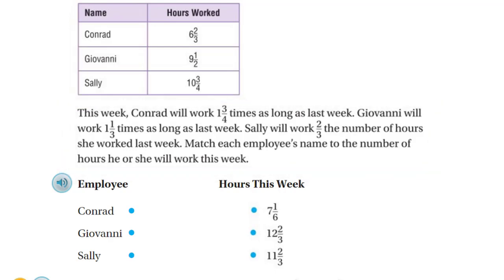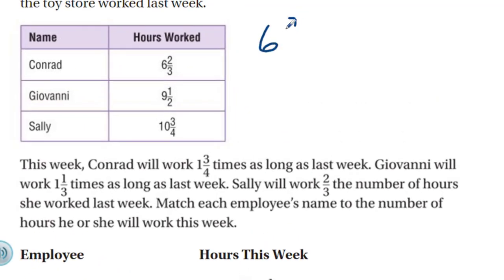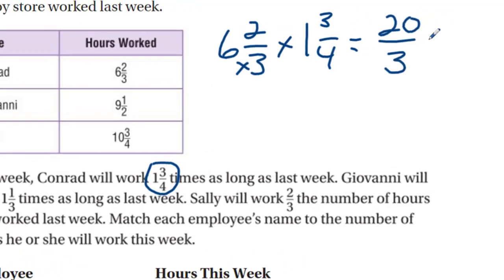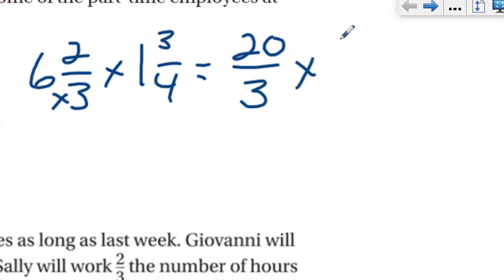Let's take Conrad. He worked six and two-thirds hours and will work one and three-quarters times as long. Since it's more than one times, his answer should be more than six and two-thirds. Let's change these to fractions greater than one: six and two-thirds becomes twenty-thirds (6×3+2=20, so 20/3), and one and three-quarters becomes seven-fourths (4+3=7, so 7/4).